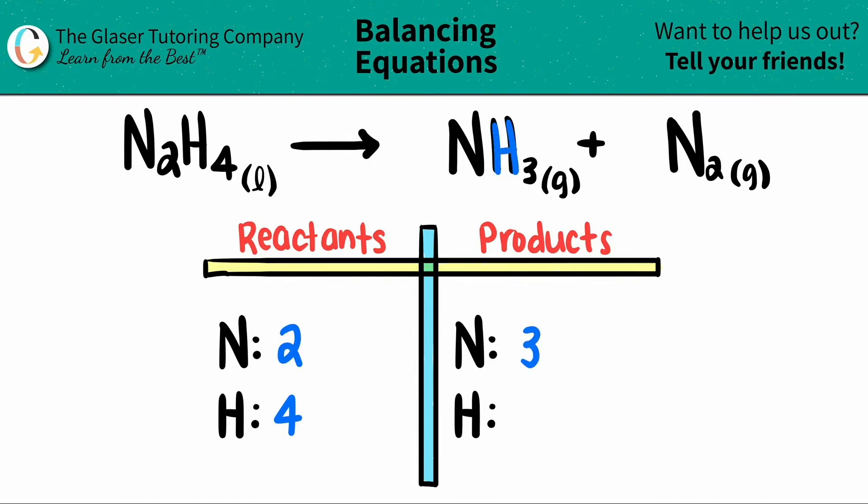And then for the hydrogen, I see that I have a three here. So I have a three. Now let's see. I can't really balance this nicely, because two times a whole number is not really going to get me three. And the same thing goes for the hydrogen. Three times a whole number will not get me four.